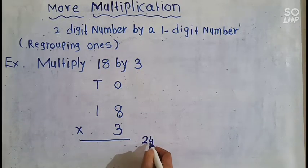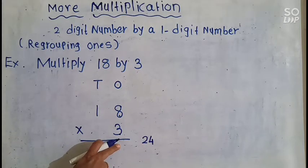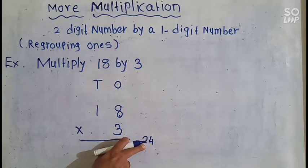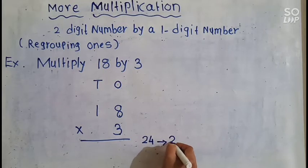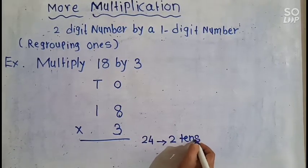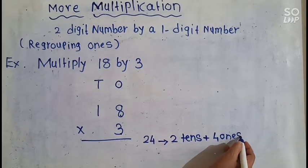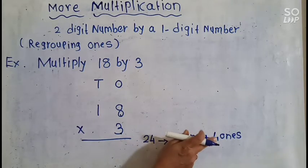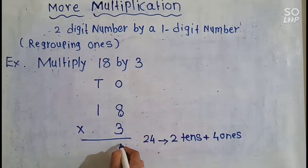This result is a 2-digit number and we have to write only one number here. 24 means 2 tens plus 4 ones. So we have to write these 4 ones here in the 1s column — these 4 ones.